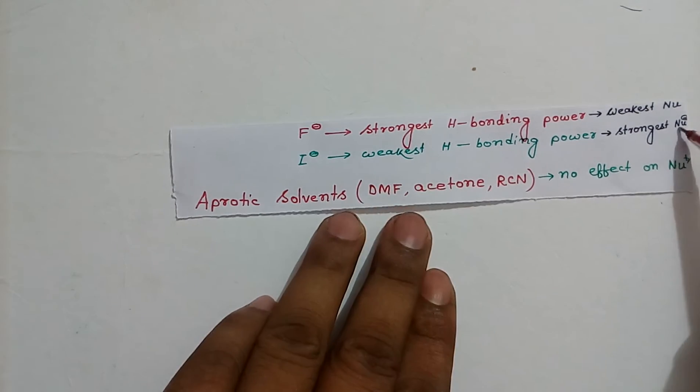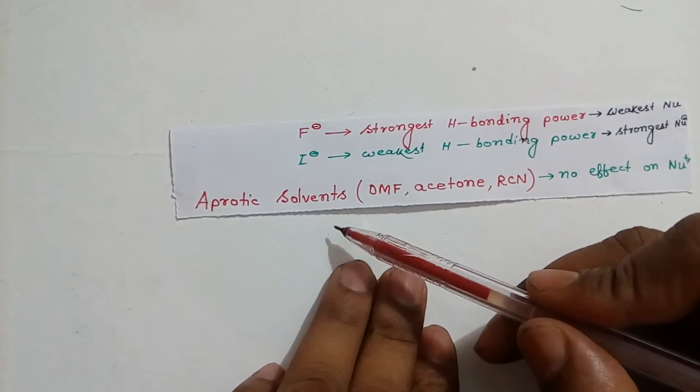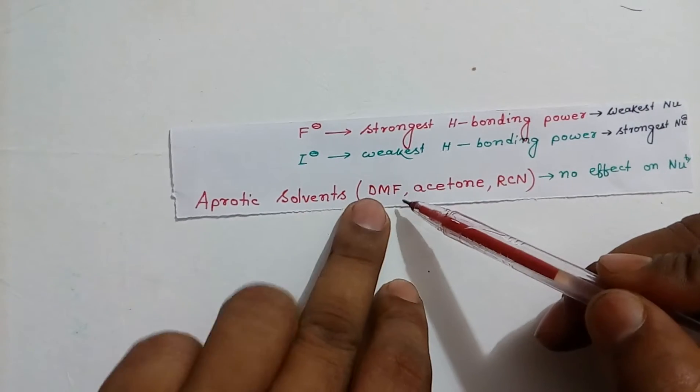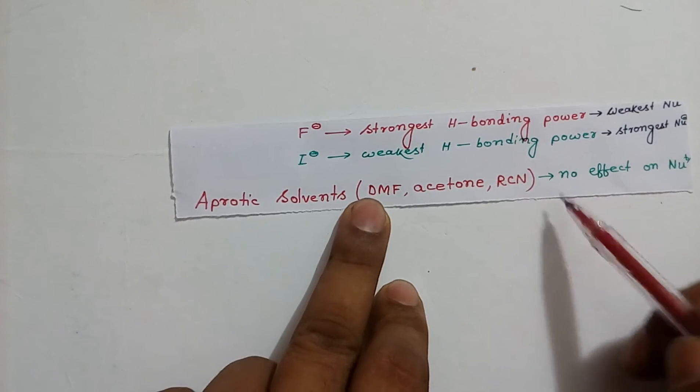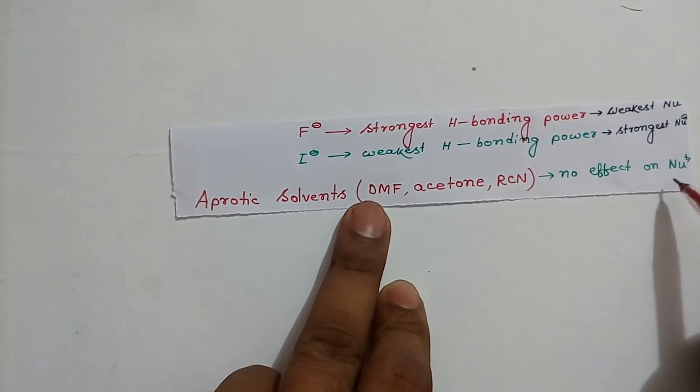Aprotic solvents like dimethyl formamide, acetone, alkyl cyanide. They have no effect on nucleophilicity.